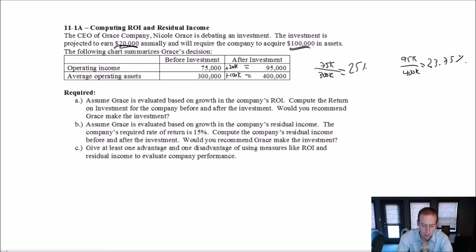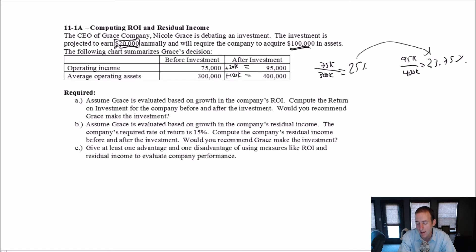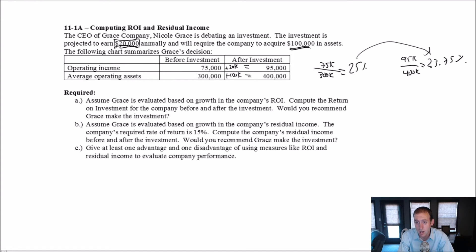Should she take the deal? On the face of it, if you could make a deal that would make your company $20,000 a year, you would take it. However, if Nicole wanted to maximize her bonus, absolutely not — taking this deal is bad for her bonus. This is a place where ROI gets very criticized as a measure. If a firm has a really high ROI, they might not make smart investments just because it might bring down their ROI a little bit. They need something that's not only profitable, but more profitable than what they're already doing. It causes companies to pass up what would otherwise be seen as good opportunities. So based on the bonus situation, Grace should pass up the investment.